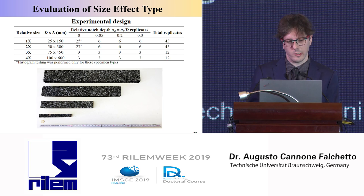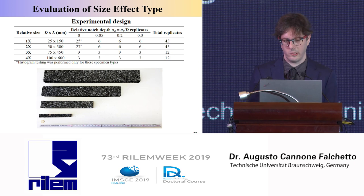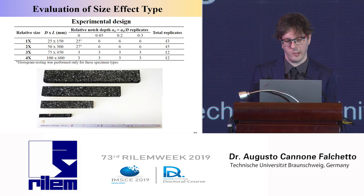These are the series of specimens I prepared. For the smaller sizes I used more specimens, and for the larger sizes I used fewer. Here is how we prepare the specimens: we basically prepare slabs of asphalt mixture. Asphalt mixture is not a cast material — you cannot put the mixture into any mold you want. You need to compact it to achieve a certain density, and from these slabs we cut the specimens and introduce notches of different depths.